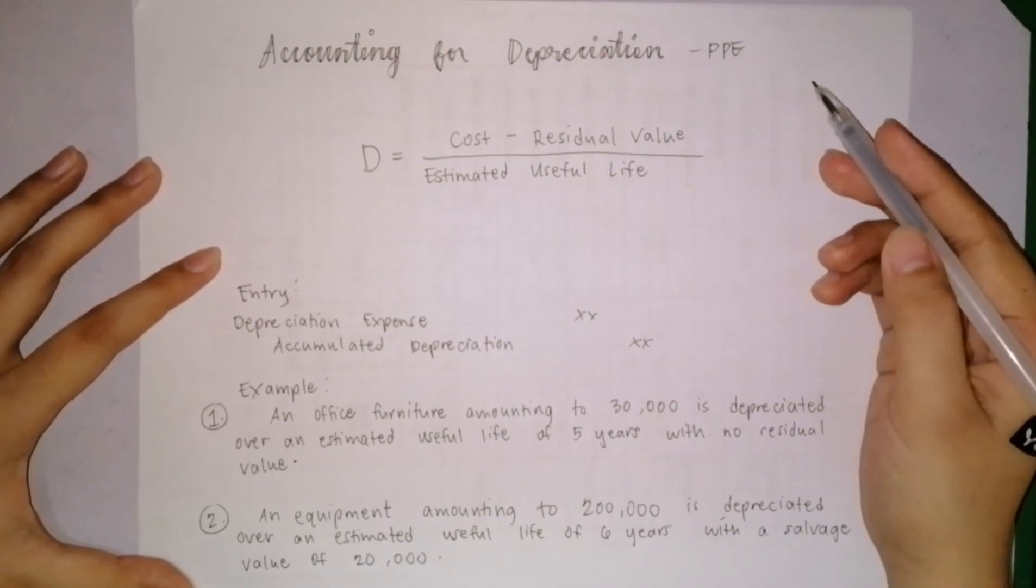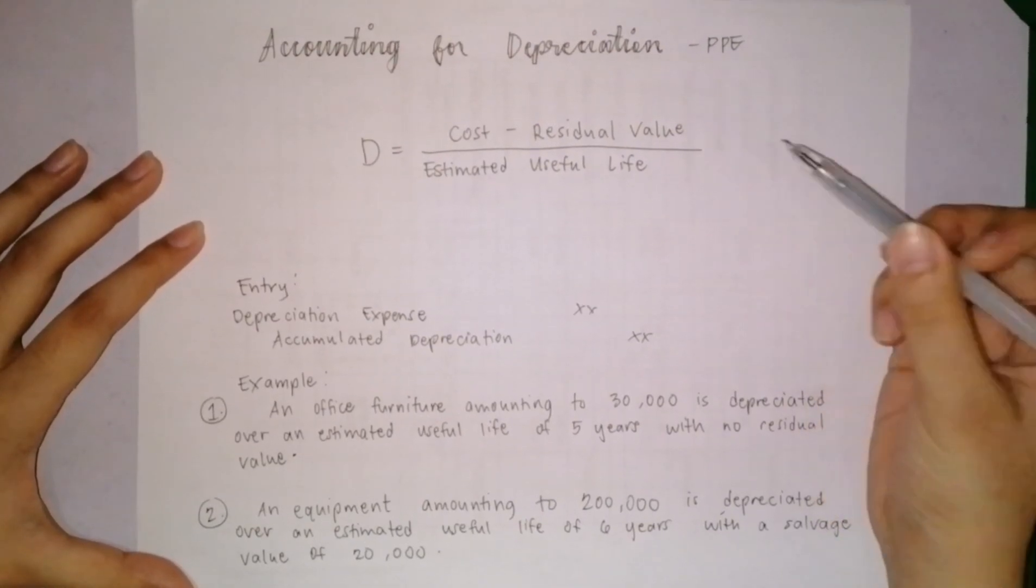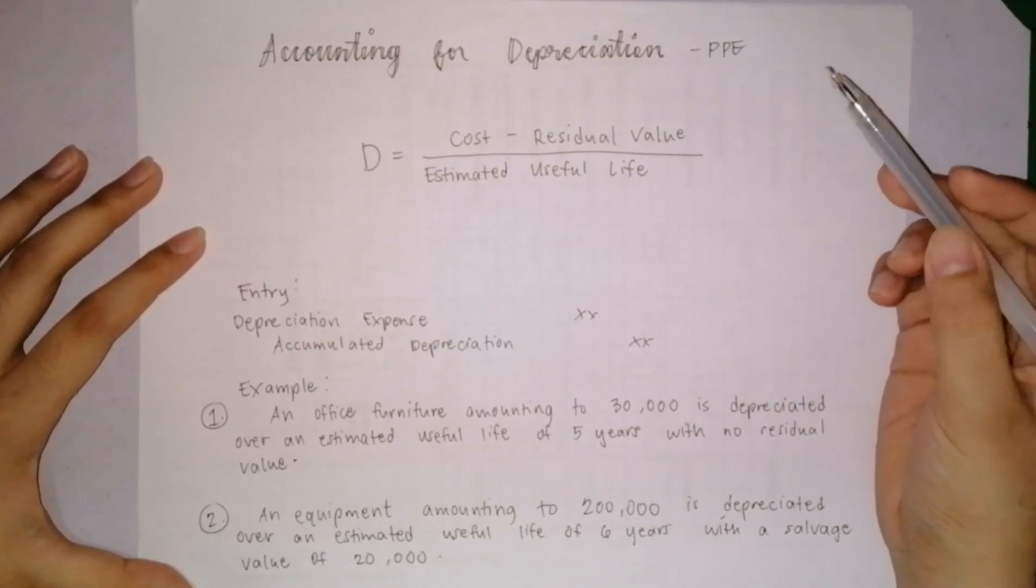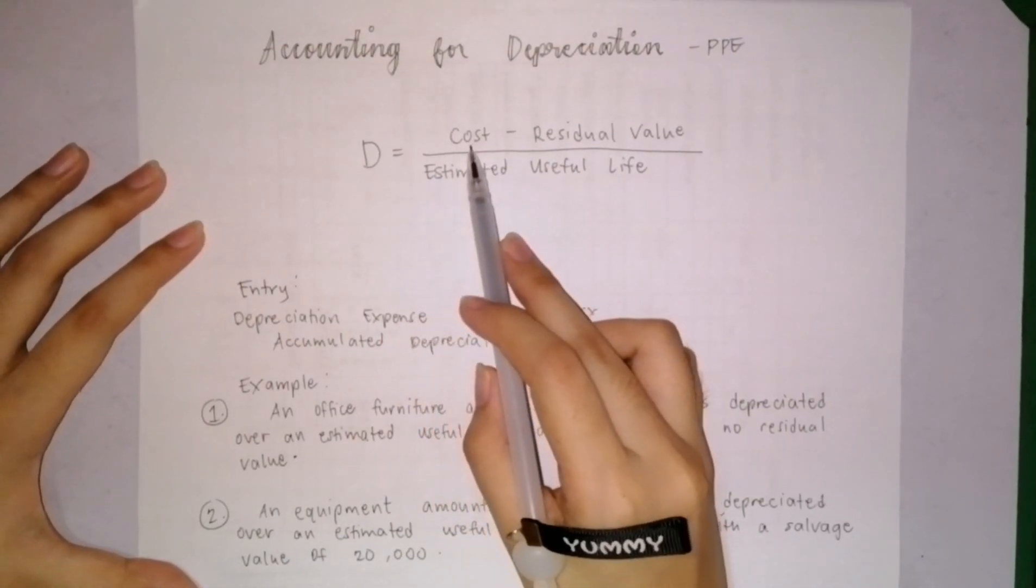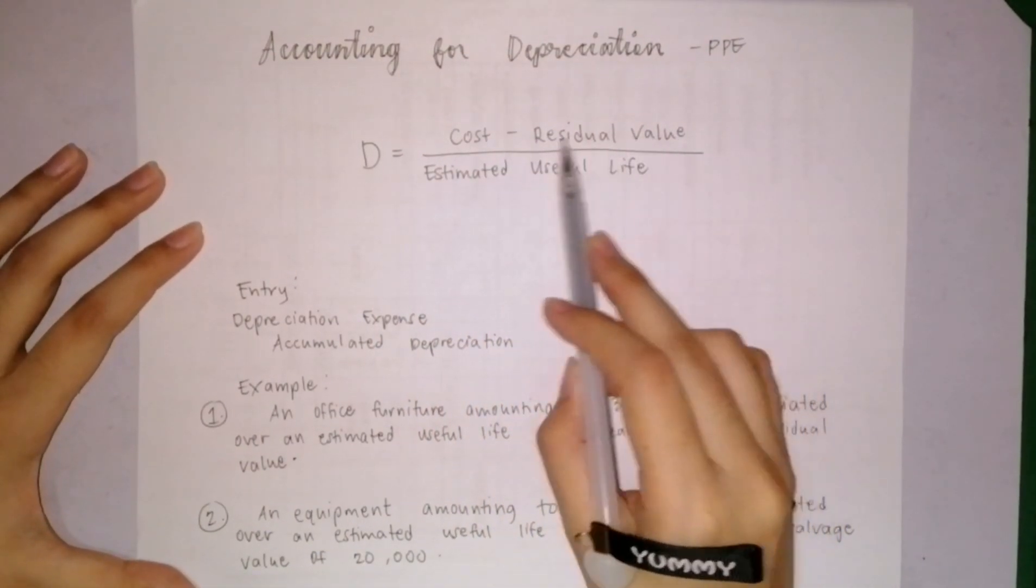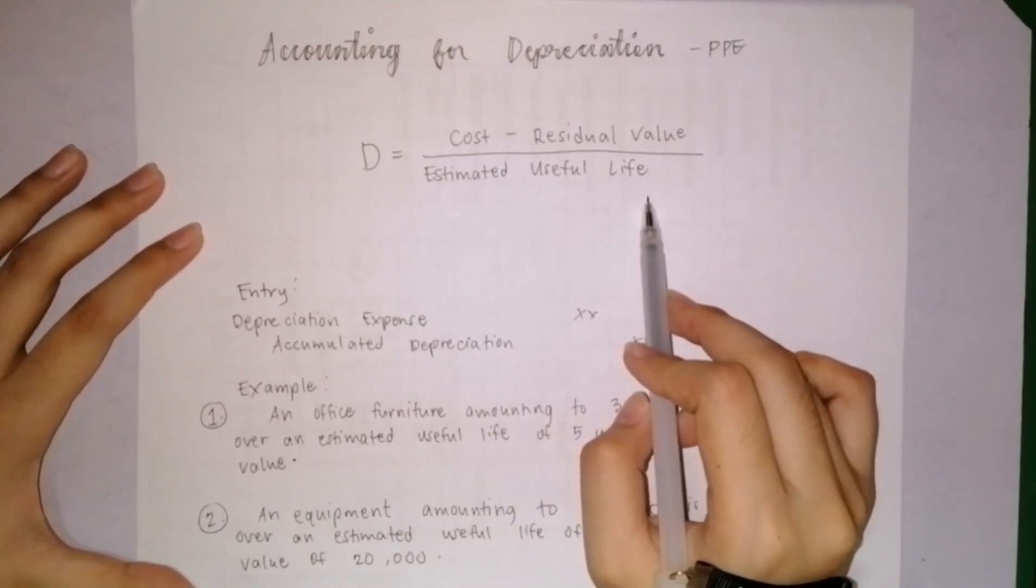The cost of the PPE is also allocated in future periods, and it is allocated based on the depreciation formula. Cost less residual value over estimated useful life is the formula for annual depreciation.